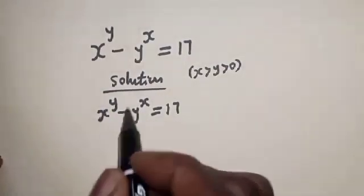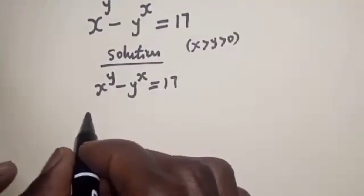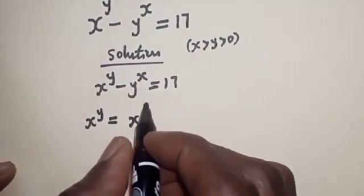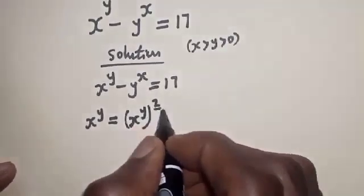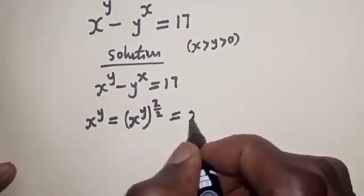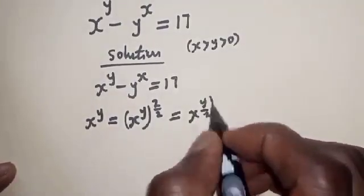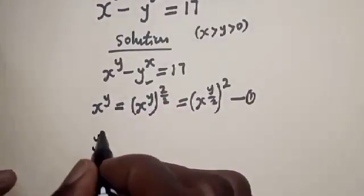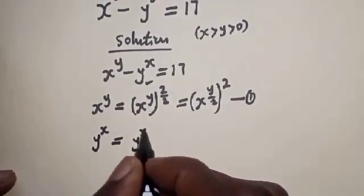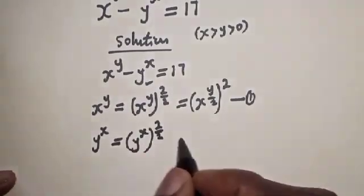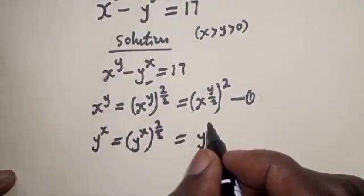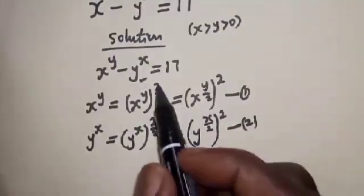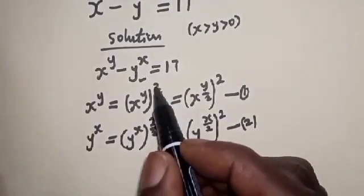Now let's transform this equation on the left hand side. S raised to power Y is equal to S raised to power Y times 2 over 2, which equals S raised to power Y over 2, squared — let's call this one. Also, Y raised to power S equals Y raised to power S times 2 over 2, which equals Y raised to power S over 2, squared — let's call this two. The 2 over 2 does not formally change the equation since 2 divided by 2 is 1.